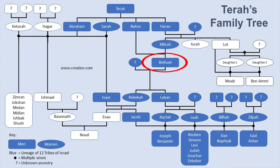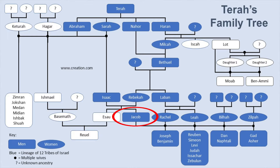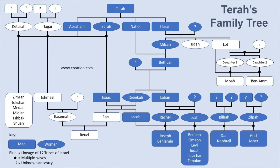Nahor and Milcah have Bethuel. Bethuel has two children we know of — Rebekah and Laban. Rebekah marries Isaac, and Isaac and Rebekah have Jacob. But then Jacob marries the children of Laban — Rachel and Leah, his first cousins — except they're much closer than first cousins because he is related to them along multiple lines. Bilhah and Zilpah are Jacob's concubines; we don't know their ancestry.